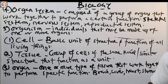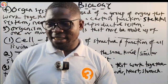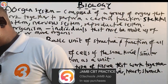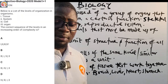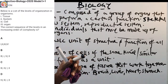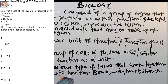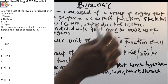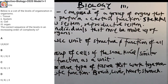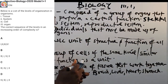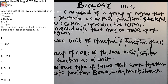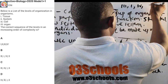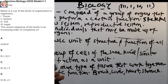Now let's go to past questions. For the 2020 question: the correct sequence from smallest to highest is — three (cell), one (tissue), four (organ), two (system). So the answer is option B. The sequence cell → tissue → organ → system is the increasing order of complexity.